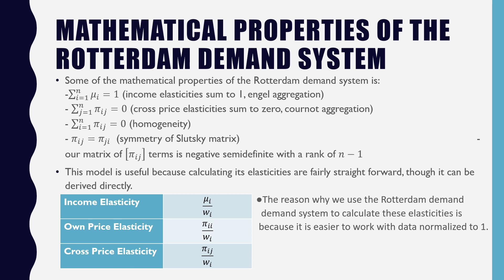The mathematical properties of the Rotterdam Demand System include the classic ones inherent in all demand systems required for consumer theory: income elasticities summing to one, cross price elasticities summing to zero, the homogeneity assumption worked into the weighted budget share, and symmetry of the Slutsky matrix. The matrix of pi_ij terms must be negative semi-definite with a rank of n minus one. Note the difference between the summation over j for cross price elasticities versus the summation over i for homogeneity.